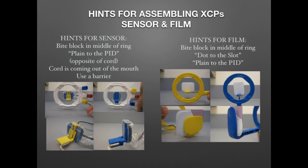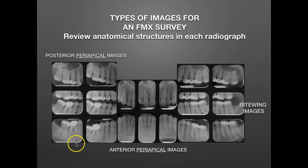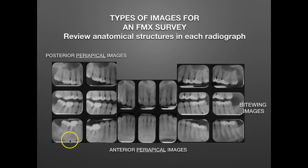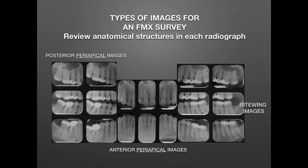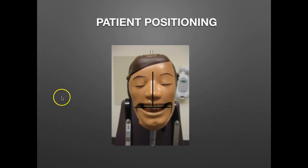Looking back at the FMX, here is an identification dot — it doesn't always interfere with the apex, but if a patient has larger teeth where the doctor needs to see deep into the alveolar process, the dot could interfere. So always use 'dot to the slot' so it ends up toward the occlusal surface. For bitewings, it varies by office, but many offices using film prefer the dot toward the floor of the mouth.